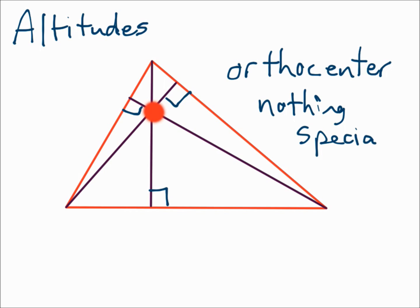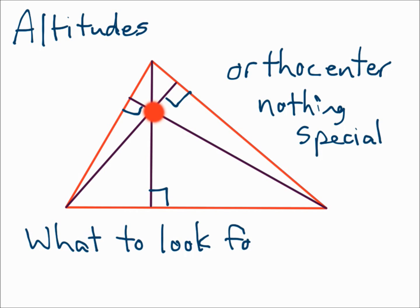Unlike the centroid, the orthocenter has nothing special about it. When you draw the altitudes, remember to look for the right angles, and those measures will equal 90. So if you have an angle measure there, just set it equal to 90 and solve.